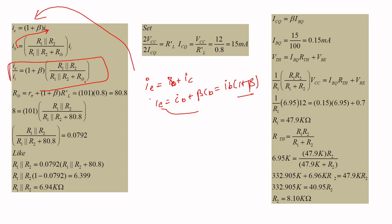Rearranging the equation: R1 ∥ R2 = 0.0792 × (R1 ∥ R2 + 80.8k). Bringing terms to the left side and solving gives R1 ∥ R2 = 6.94 kilohms.